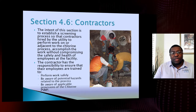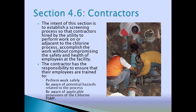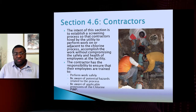Contractors: when you have contractors on site, they need to know what they're working around. Though the contractors may have a completely different job — this picture shows contractors putting in a T for a pipe, having nothing to do with the process that handles anhydrous ammonia or chlorine gas — if they're going to be working around it, it's imperative they know exactly what they're working around. They have a right to know the chemicals in their immediate vicinity. The contractor's responsibility is to ensure their employees are trained to the same standard as your process safety management and risk management program.